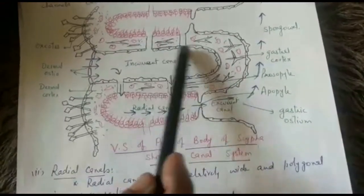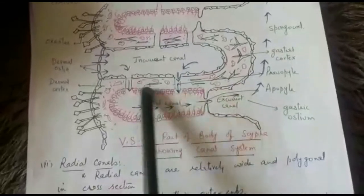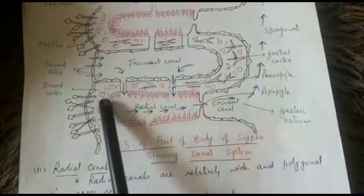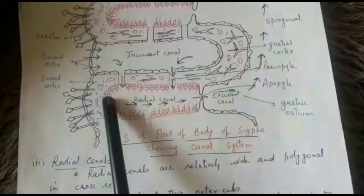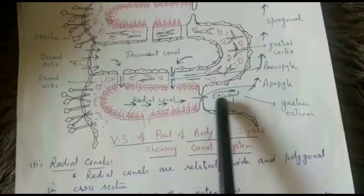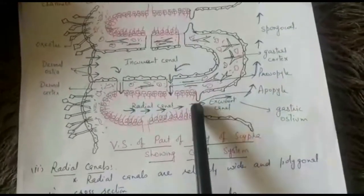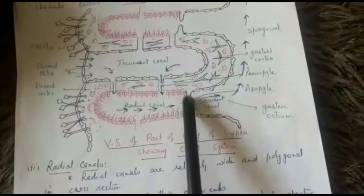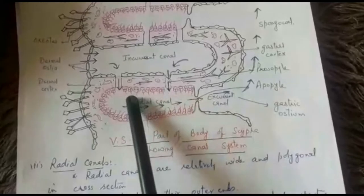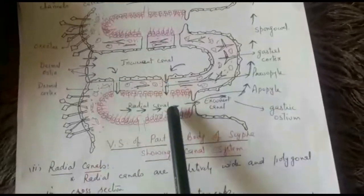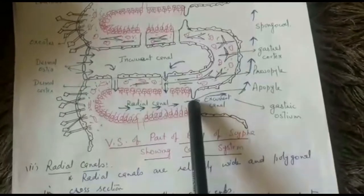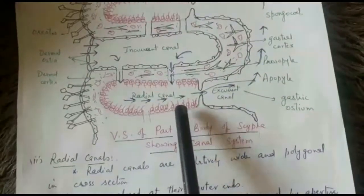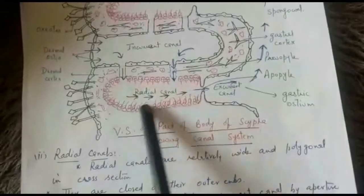The third type of canals are the radial canals. Radial canals lie below the elevations. Their outer ends are closed and they end some distance behind the surface. Internally they open into the fourth type of canal, the excurrent canals, by means of an aperture known as the apopile. The apopile is a circular aperture which lies in the center of a membrane known as the diaphragm. Radial canals are lined by loosely placed flagellated collared cells known as choanocytes.